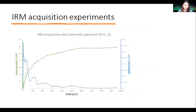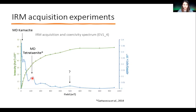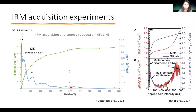I then did some IRM acquisition experiments to find out what is magnetically present in the sample. The first sample shows the IRM acquisition curve and its differential — representative of multi-domain kamacite, with a peak at low fields. In the second sample, extra peaks show up in the higher-coercivity spectrum. There is again the multi-domain kamacite peak, and another peak has appeared for multi-domain tetrataenite, identified as such in previous literature. There is also a tiny peak at 500 millitesla which I'm not entirely sure how to identify, based on just one data point, so I'd like to repeat the experiment with higher resolution at higher fields.